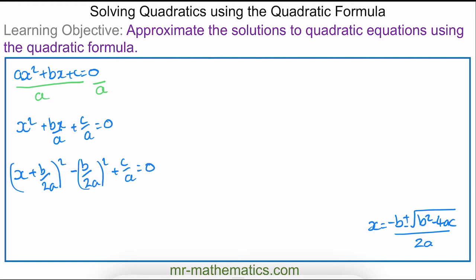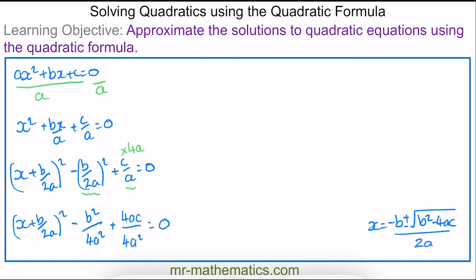Now I'm going to square this fraction and write c/a as an equivalent fraction by multiplying numerator and denominator by 4a. So now we have −b²/4a² + 4ac/4a² = 0.